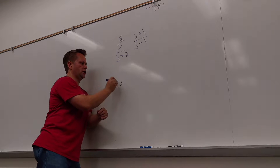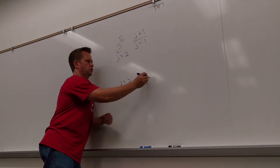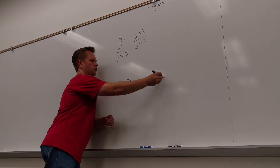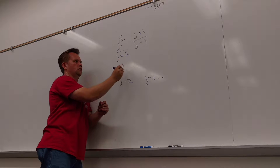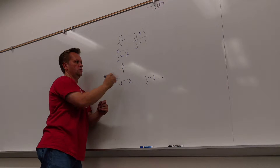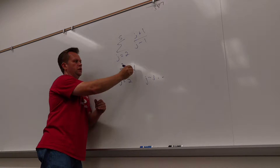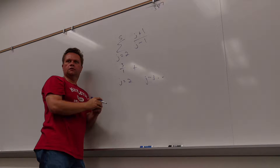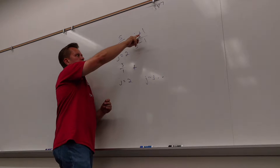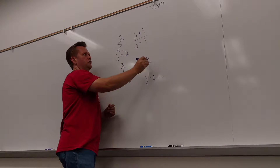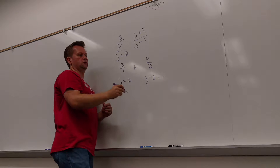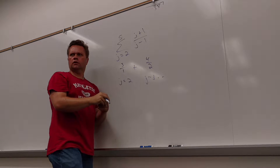You can think about j starting at 2 and then going to 3 and so forth. What does it look like when j is 2? You get 2 plus 1 over 2 minus 1. What does it look like when j is 3? 4 plus 1 over 4 over 2. Is everybody with me?